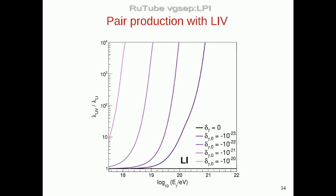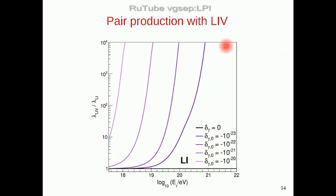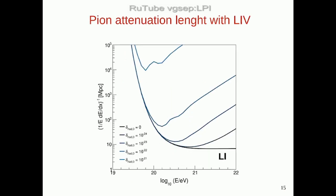Here are some examples of how these interactions change. This is the mean free path of pair production — a photon interacting with a photon giving a pair — as a function of energy. The black line shows the Lorentz invariant case. When we add the possibility of Lorentz invariance violation, increasing the value of the terms, we see a very different profile: the mean free path increases very rapidly, meaning photons can travel much further. The universe becomes more transparent to these photons, and more photons arrive here.